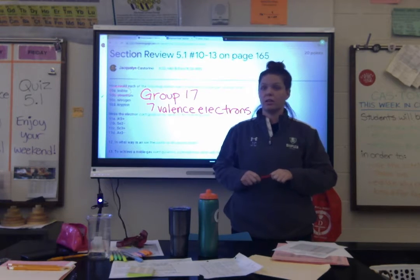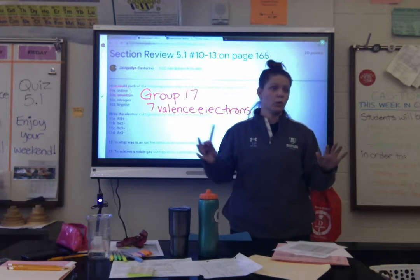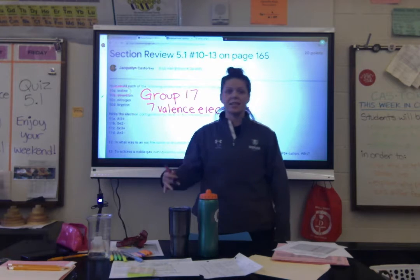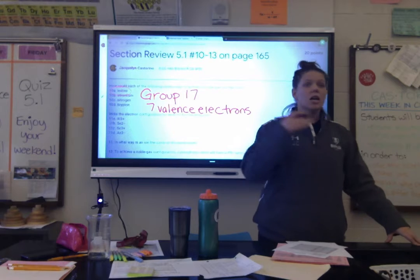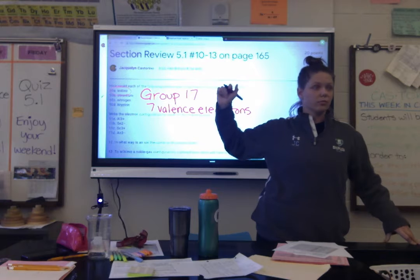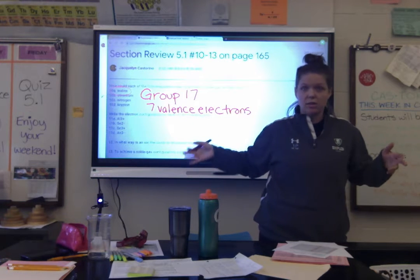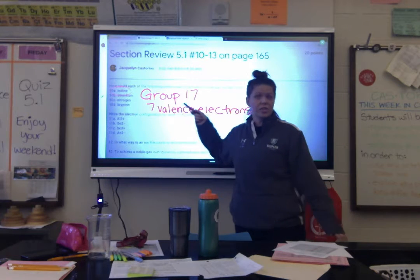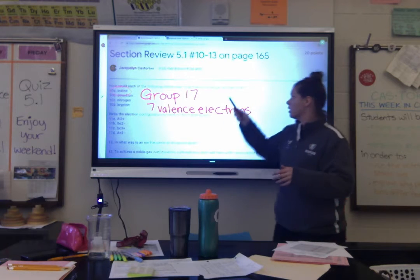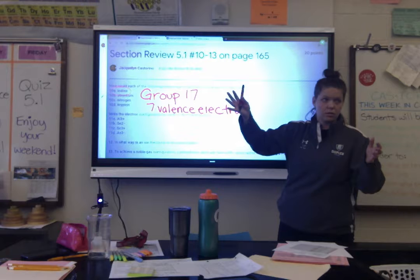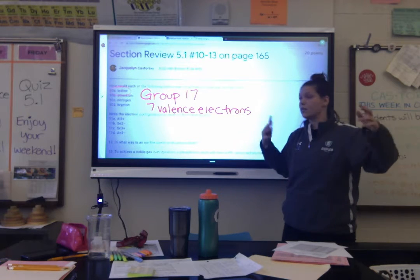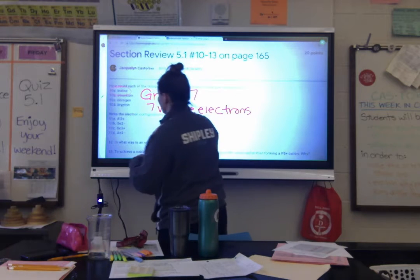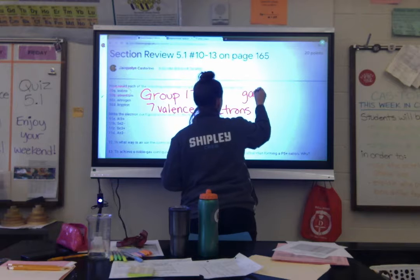Noble gases are in group 18, so they have eight valence electrons. Everyone on the periodic table wants eight valence electrons — we should remember this from Monday. So if iodine has seven valence electrons, it needs to gain one more electron to have eight and achieve noble gas configuration. The answer to 10A is: iodine gains one electron.